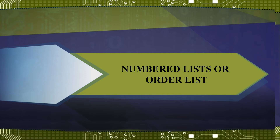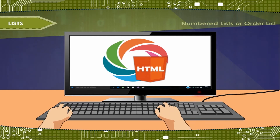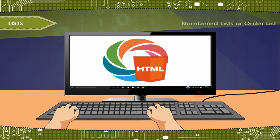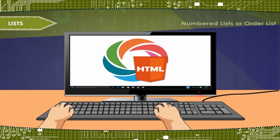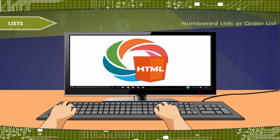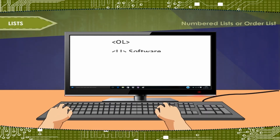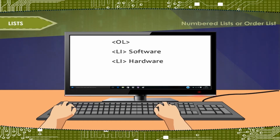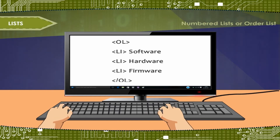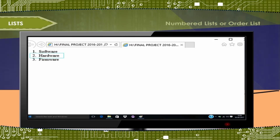A numbered list, also called an ordered list, is identical to an unordered list except it uses the tag OL instead of tag UL. The items are tagged using the same LI tag. For example: tag OL, tag LI software, tag LI hardware, tag LI firmware, close tag OL. The output is: 1. Software, 2. Hardware, 3. Firmware. In the OL tag, the attribute 'type' is used to specify the style of the list.